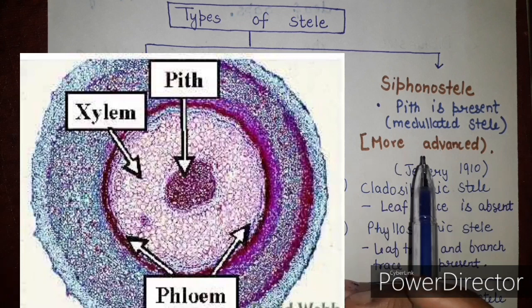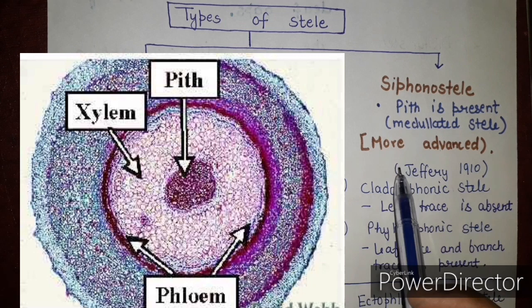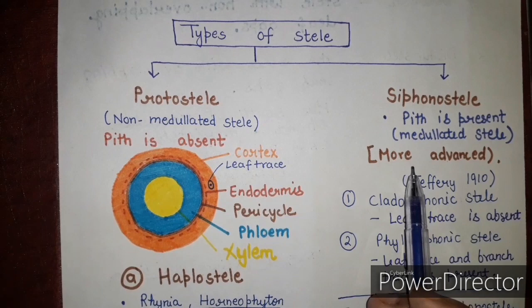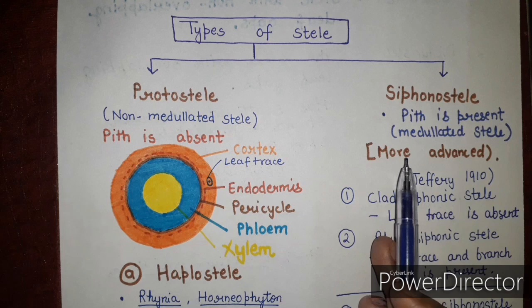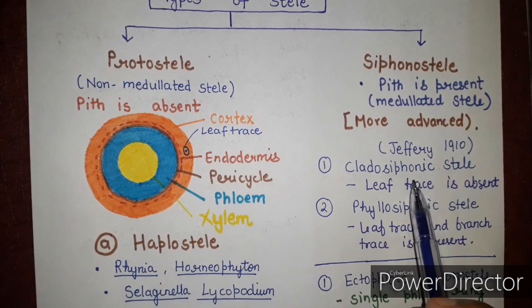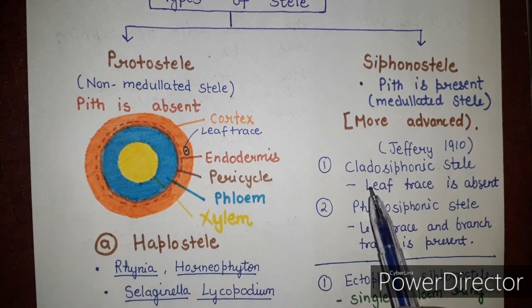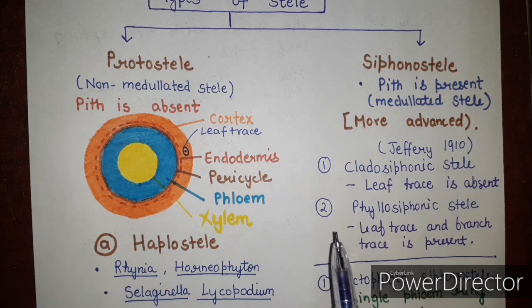Now, the siphonostele: pith is present and it is called the medullated stele. It is the most advanced form, more advanced than protostele. Siphonostele can be classified in different ways. Geoffrey in 1910 classified siphonostele into two basic types: cladosiphonic stele, in which leaf trace is absent, and phyllosiphonic stele, in which leaf trace and branch trace are present.